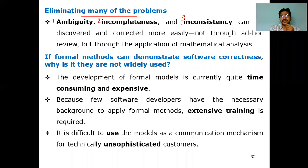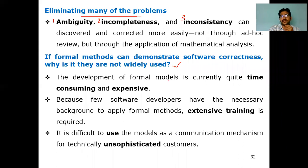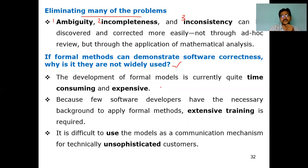If formal methods can demonstrate software correctness, why are they not widely used? Even instead of waterfall, incremental, spiral, or other specialized process models, why are people not using formal methods? Because there are some limitations that prevent their widespread adoption.